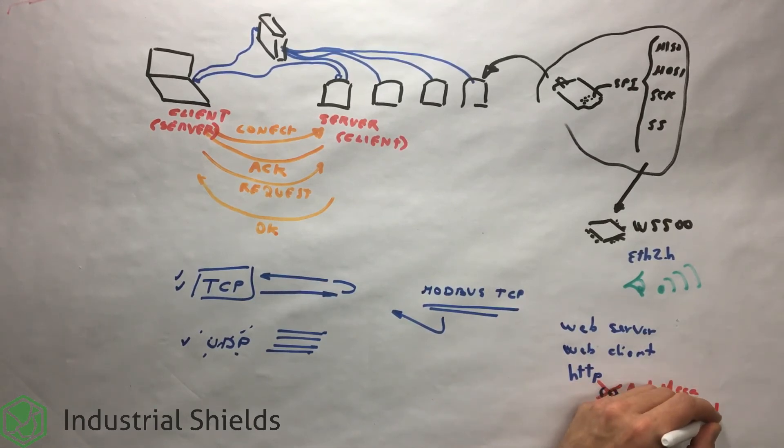Through the Ethernet protocol, it is also possible to manage web requests, HTTP, adding additional libraries. In this way, the controller is able to be in communication with web servers through HTTP. The controller can also be defined as a web server or a web client.